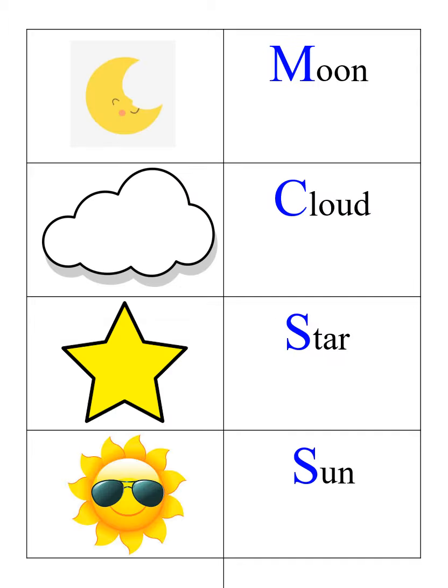Next, we have four more words from the story. Moon, m-m-moon, cloud, c-c-cloud, star, s-s-star, sun, s-s-sun.